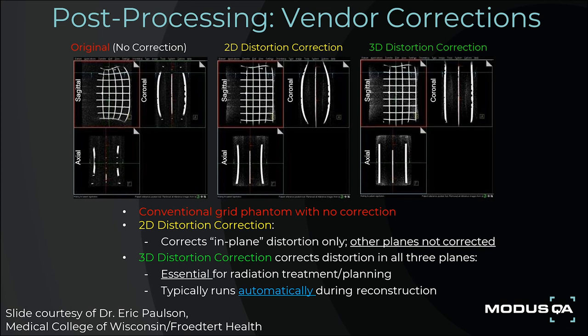Gradient coil designers use harmonic analysis methods, among other field target techniques, to design gradient coils. The requirement for large diameter, short length bores confounds perfect gradient linearity, necessitating the use of spherical harmonic-based 2D and 3D image correction to gradient nonlinearities for all MR manufacturers.